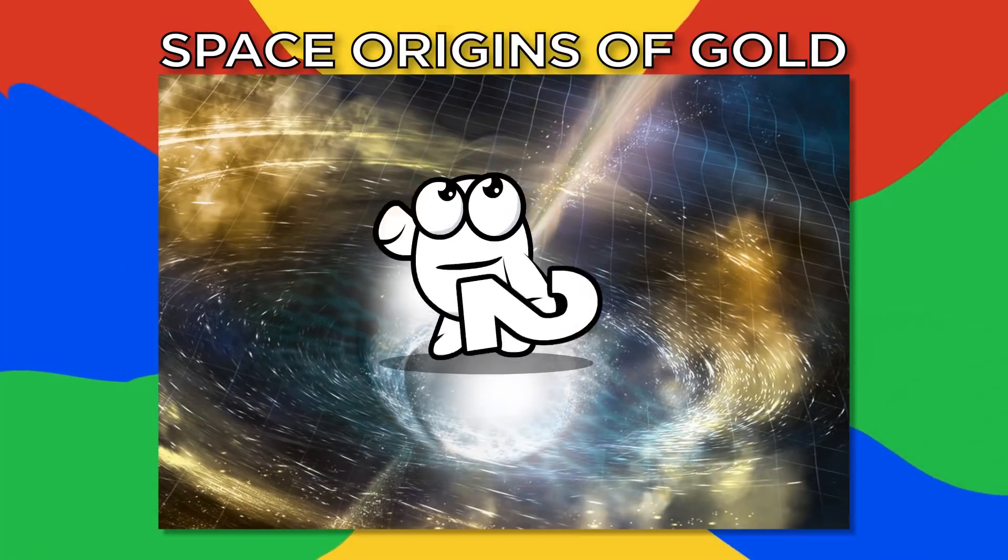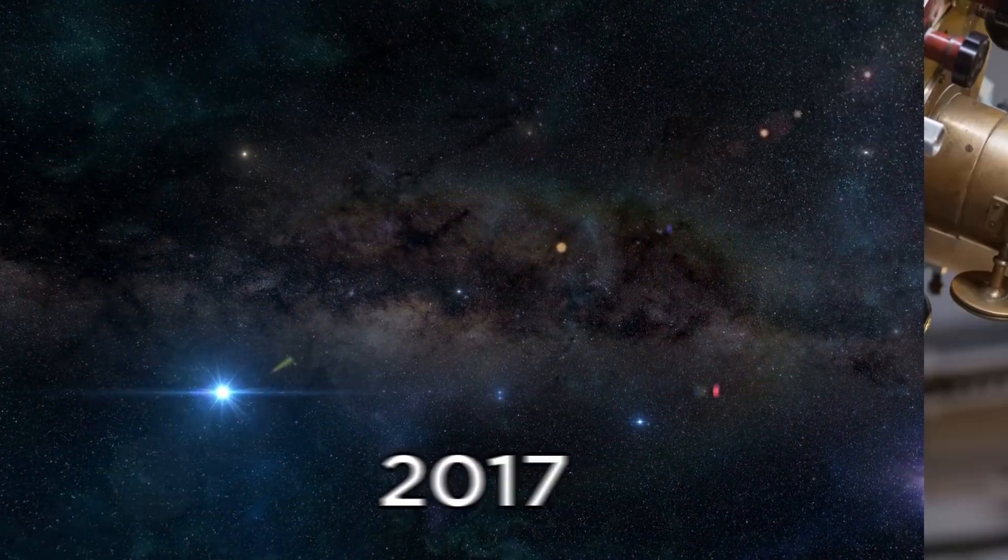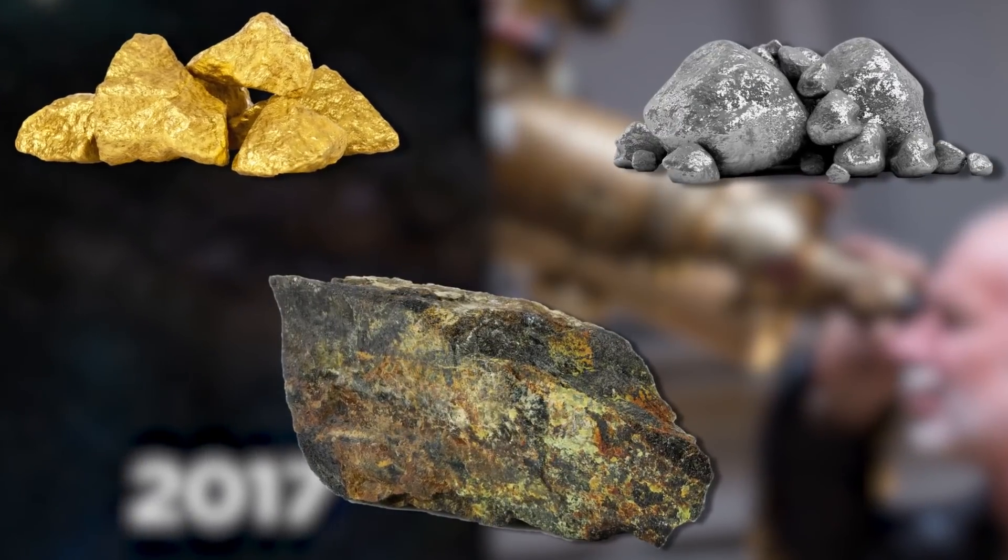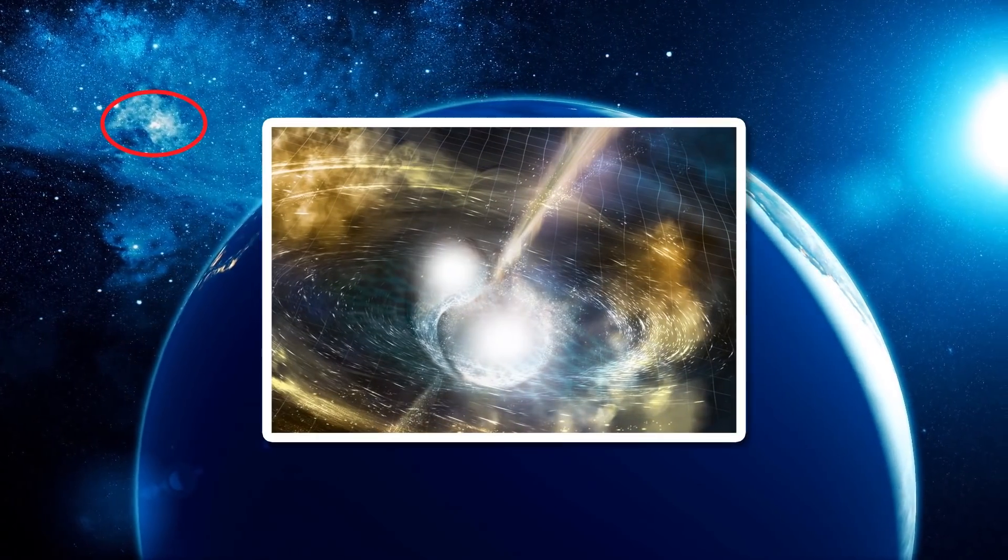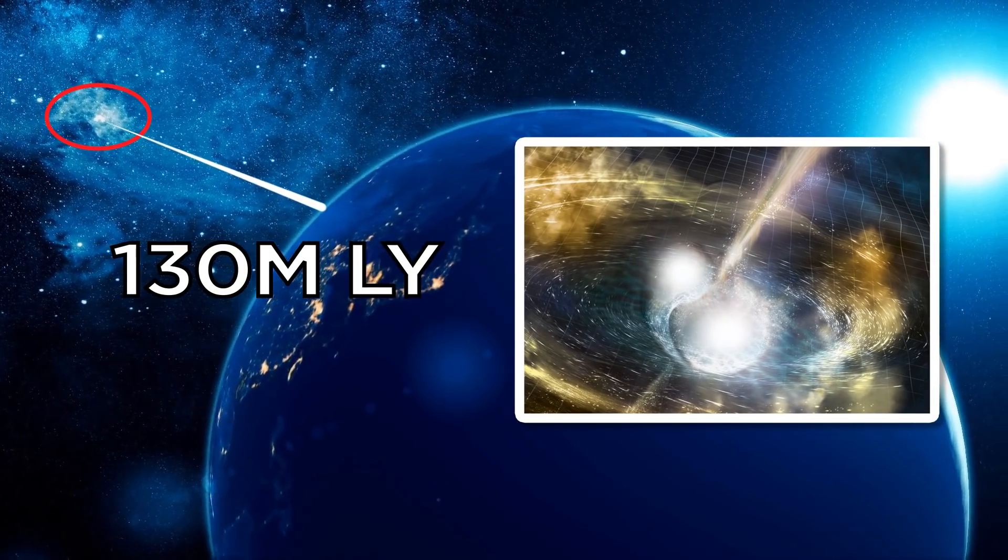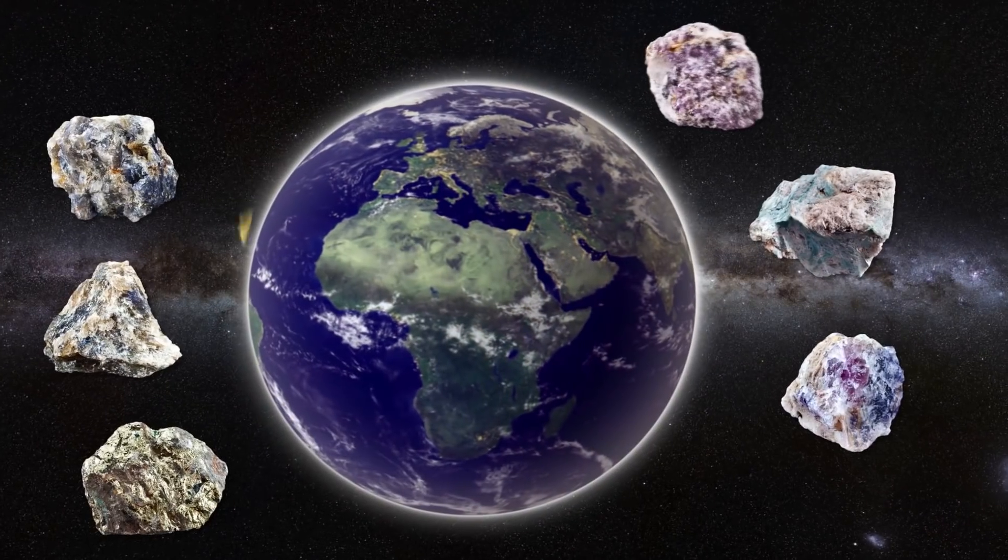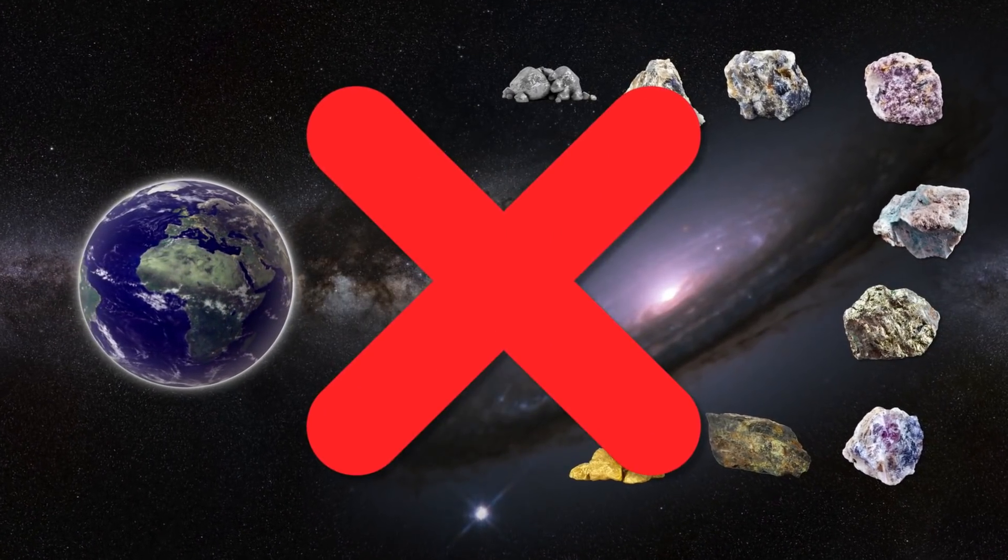Number two, Space Origins of Gold. In October 2017, astronomers discovered where heavy elements, such as gold, platinum, and uranium came from. With the help of LIGO and the Virgo Interferometer, they were able to locate two neutron stars colliding against each other 130 million light years away from the Earth. Due to how dense these stars are, their collisions caused gravitational waves and led to the formation of heavy elements. Researchers once thought that most of the heavy elements on Earth were due to supernovas. This discovery suggests otherwise.